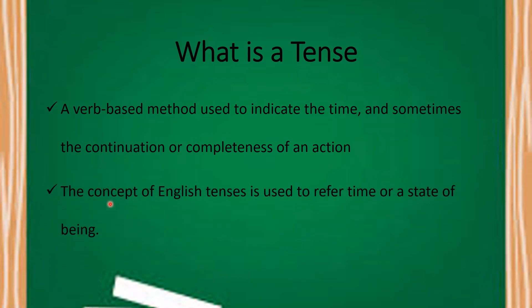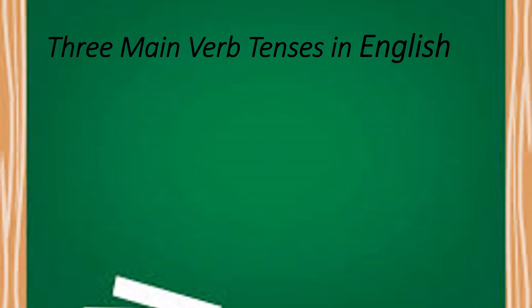Moreover, we can also say that the concept of English tenses is used to refer to time or a state of being, which simply means that the tense of a verb shows the time of action. There are three main verb tenses in English language, which are present, past and future.